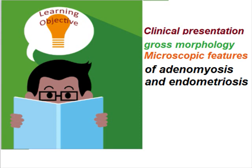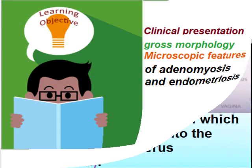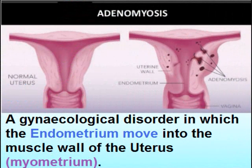Today's learning objectives are: clinical presentation, gross morphology, and microscopic features of adenomyosis and endometriosis. Adenomyosis is a gynecological disorder in which the endometrium moves into the muscle wall of the uterus, i.e., the myometrium.